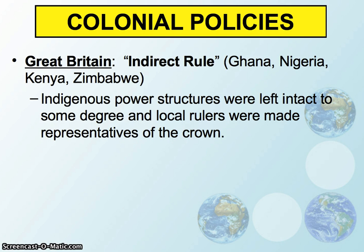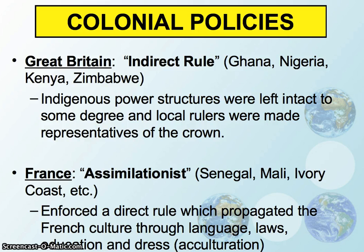Different European powers used different strategies to control their colonies in Africa. Britain used a strategy of indirect rule in colonies including Ghana, Nigeria, Kenya, and Zimbabwe. With indirect rule, the British basically left the indigenous power structures in place — local political structures remained and local rulers were made representatives of the Crown. The British were still able to access resources and extract taxes, but they left local leaders in place. After independence, these countries fared a little better because they still had that indigenous power structure.